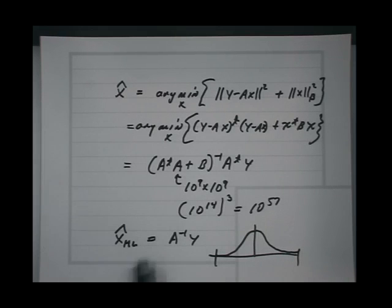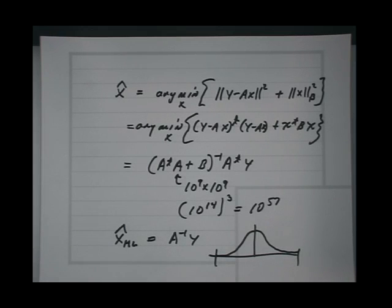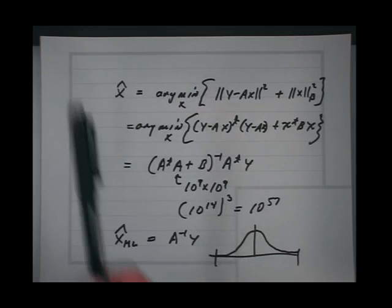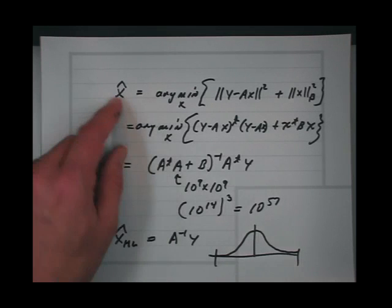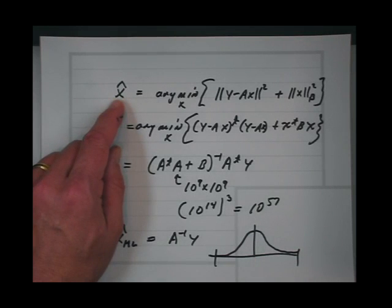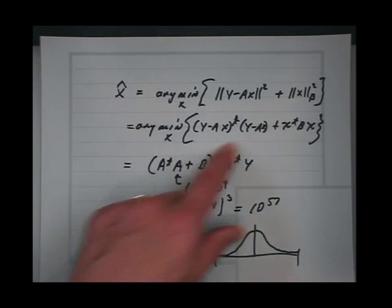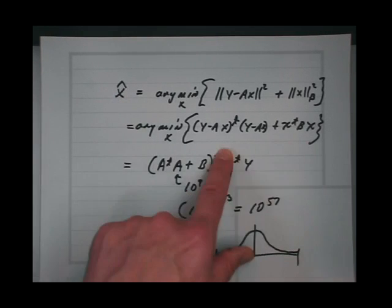So the ML estimator doesn't work. The MAP approach works because you're accounting for the prior. The MAP estimate is achieved by minimizing this cost function, which we'll talk about more in the next session.